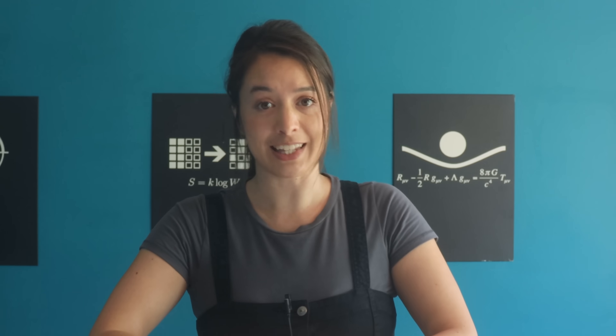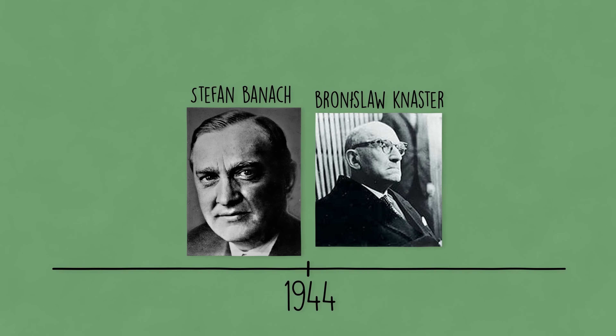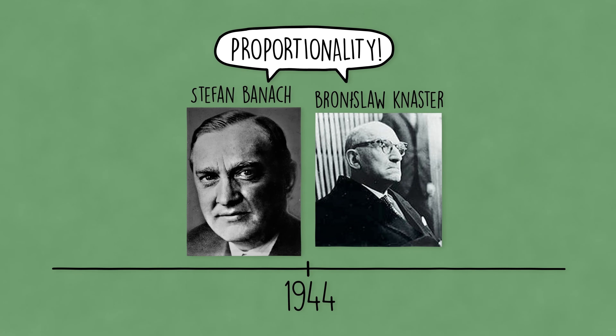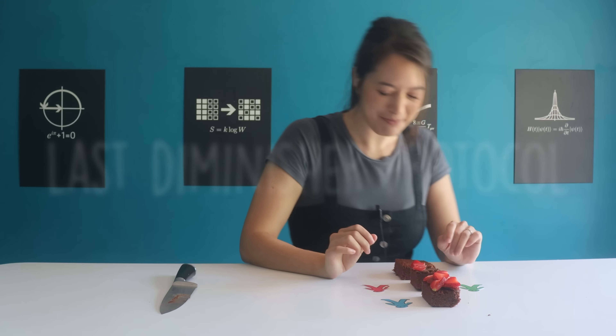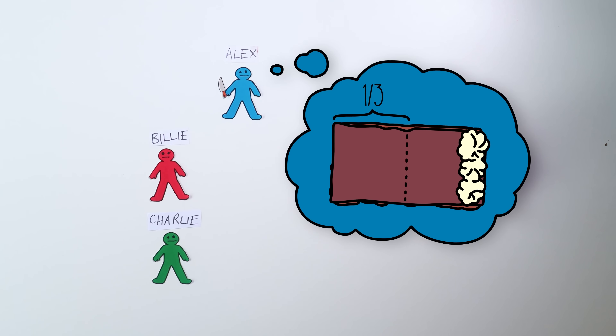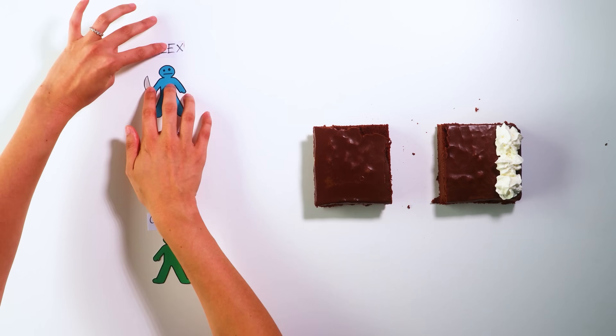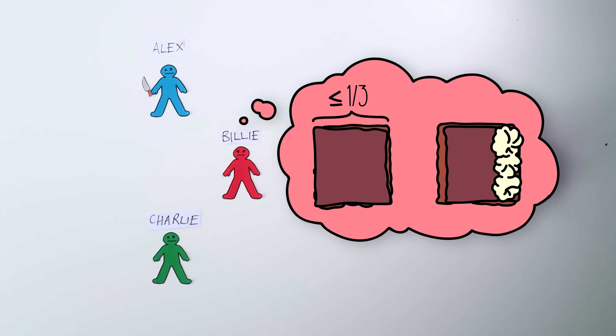This is a huge drawback for anyone with more than one friend. We can ask ourselves: what does it mean to be fair? We all have some intuitive notion, but to come up with an algorithm for fairness, we need to formulate it mathematically. In the 1940s, two researchers had the idea of proportionality — that everyone feels like they got at least their proportion of the cake. So if there are three players, they each feel like they got at least one third. They came up with an algorithm to guarantee proportionality for any number of players, called the Last Diminisher Protocol.